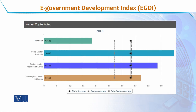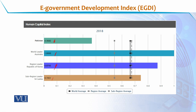When we talk about the Human Capital Index, the world leader is Australia with a score of 1. The regional leader is Korea with a score of 0.87, and the sub-regional leader is Sri Lanka with a score of 0.75. Pakistan's score is 0.3682. When we compare all these statistics, we come to know that Pakistan is far behind from the world and from the region in adopting e-government initiatives and providing e-government services to its citizens.